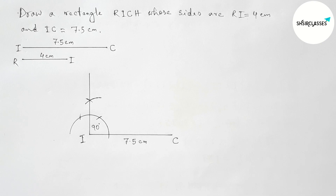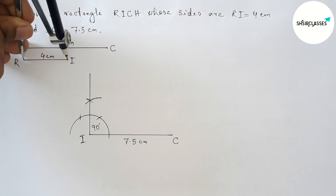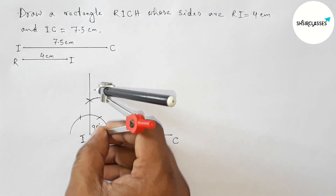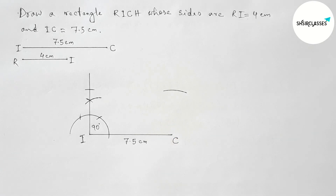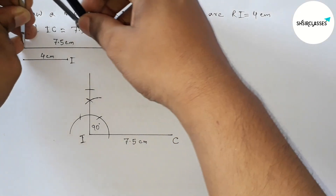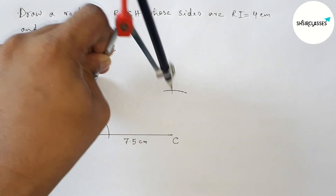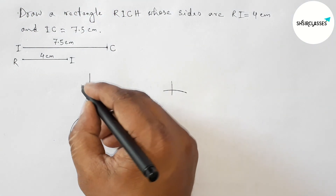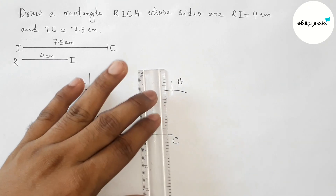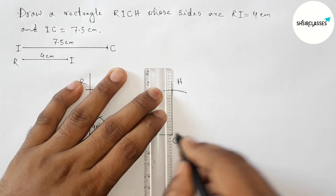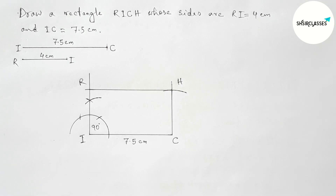Next, taking 4 centimeter length with the help of a compass. Putting the compass on point I and cutting here, then drawing an arc. Again taking 7.5 centimeter length with the compass, putting the compass here and cutting here. Now taking point R and point H, first joining CH, then joining RH to complete our required rectangle RICH.